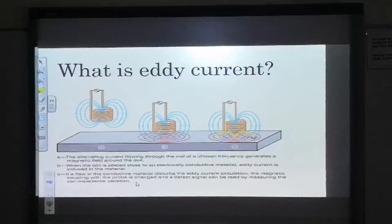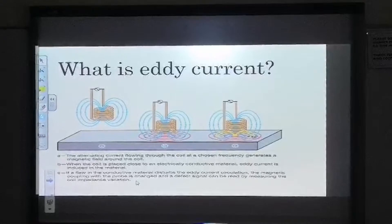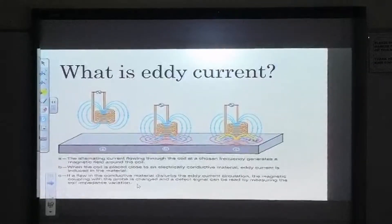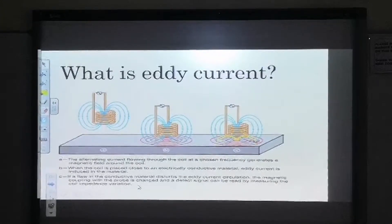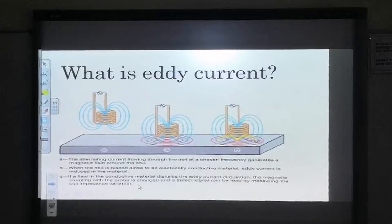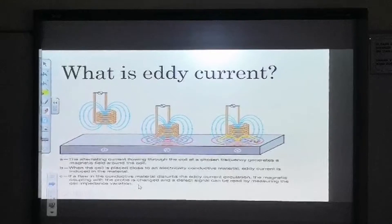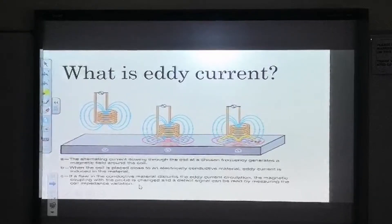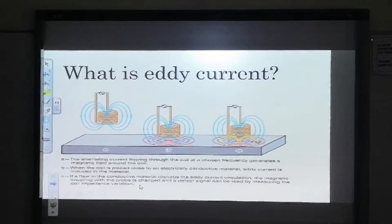So, now I'm going to talk about eddy current. What is eddy current? Eddy currents are currents which circulate in conductors, like swirling eddies in a stream. They are induced by changing magnetic fields and flow in closed loops, perpendicular to the plane of the magnetic field.